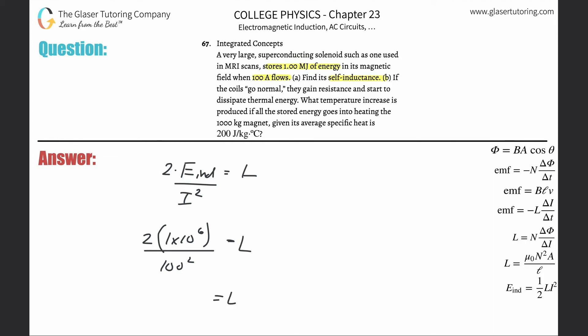Now all we simply need to do is just plug it on into the calculator. So 2 times 1 times 10 to the sixth divided by 100 squared, 200.